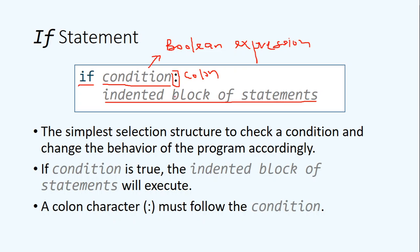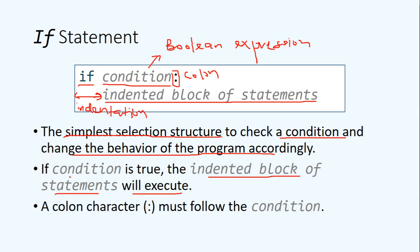There is one more subtle detail: there is a gap called indentation — a gap from the far left of the code to the statements that we are going to write after the if condition. The if statement is the simplest selection structure and it allows us to check a condition and change the behaviour of the program accordingly. Only when the condition evaluates to true will the indented block of statements be executed. The colon character is required and must follow the condition.